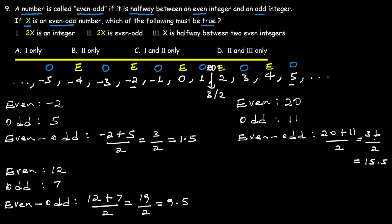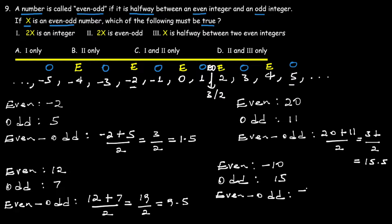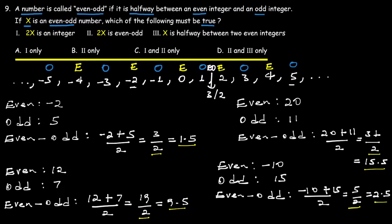For example, taking even number negative 10 and odd number five: negative 10 plus five divided by two gives us an even-odd number. The result is a fraction — not a whole number. Similarly, other examples yield fractions or decimals, confirming that even-odd numbers are not integers.